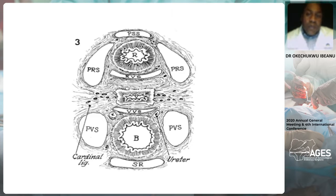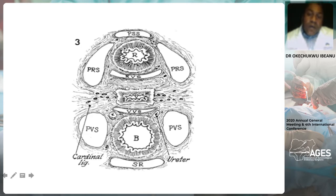This diagram shows the spaces. From anterior we have the space of Retzius with the bladder posteriorly, and on both sides of the bladder we have the paravesical spaces. The vagina, which is posterior to the bladder, has the vesicovaginal and vesicouterine space between it and the bladder. Lateral to the vagina is the cardinal ligament, and the uterine artery typically branches off the internal iliac artery. We delineate the paravesical and pararectal spaces in order to skeletonize the uterine artery. The pararectal space straddles both aspects of the rectum. In front of the rectum and behind the vagina is the rectovaginal space, and behind the rectum is the presacral space.